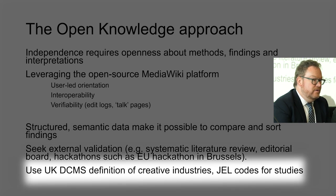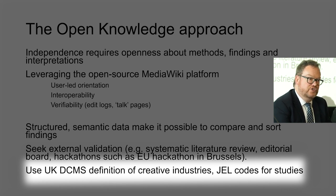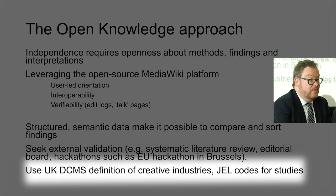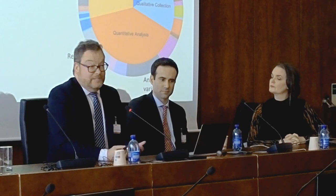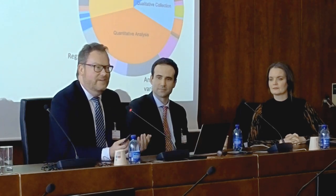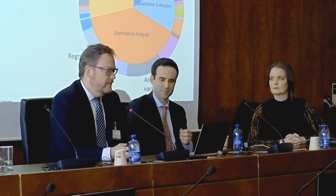We use open and standardized metrics — for example, the DCMS UK definition for creative industries to construct sector fields, and JEL codes, which are economics codes for discipline, to organize papers. When we started out, we had to figure out what would be on a wiki page for a given piece of evidence about copyright. The first decision was: what counts as a study for inclusion in the copyright evidence wiki?